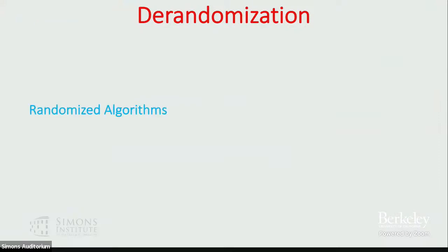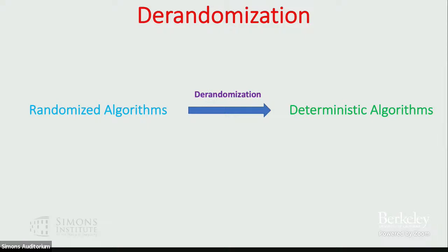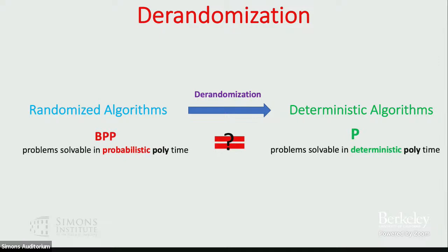De-randomization is the process, as the name suggests, that converts randomized algorithms into equivalent deterministic algorithms. In the notation of complexity theory, it's essentially asking whether BPP — the class of problems solvable in probabilistic polynomial time — equals P, the class of problems solvable in deterministic polynomial time.